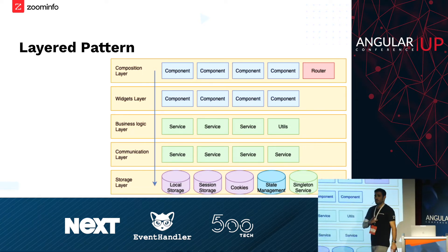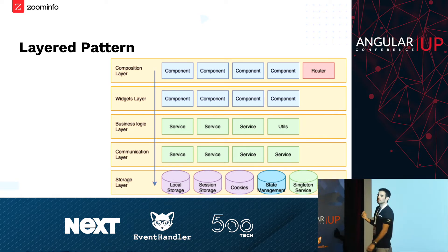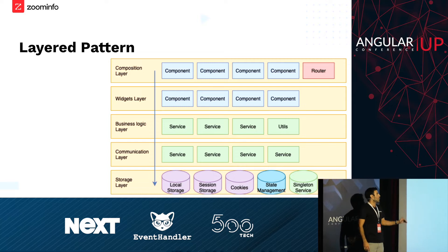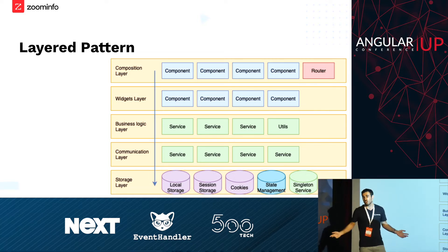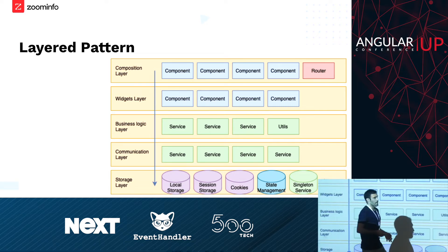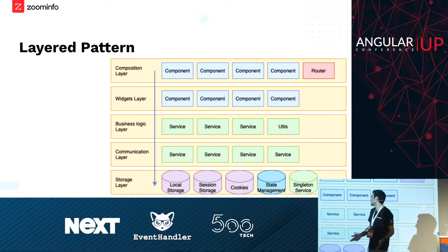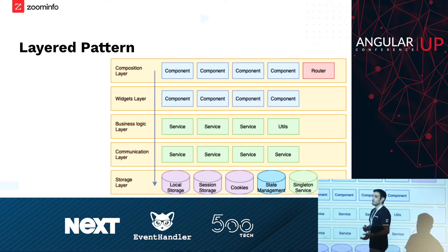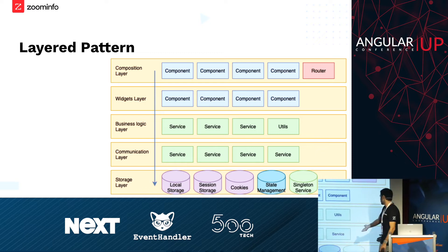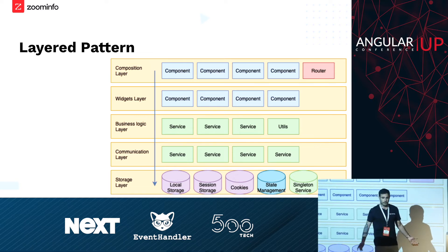I think some of you have already seen this pattern many times, maybe from old methodologies like Java. So we have several layers of the application. We have the composition layer, which exposes different pages that consume widgets, which have their own functionality and business logic. This business logic comes from the services, because it shouldn't be implemented in components — components should be lean. Then we have the communication layer, which is how I communicate with web services. And eventually, I might want to store data in state management like Redux, singleton services, local storage, session storage, or cookies.